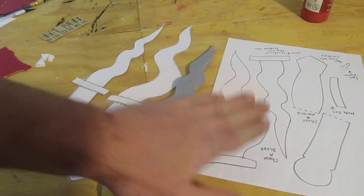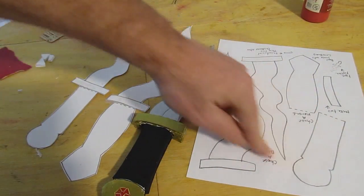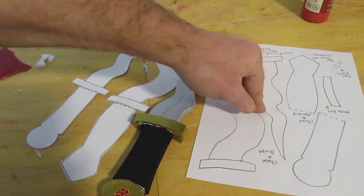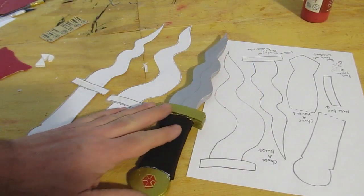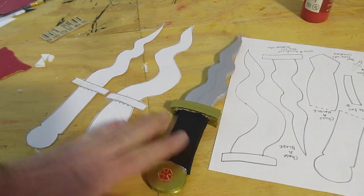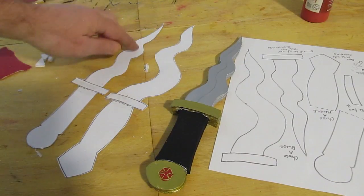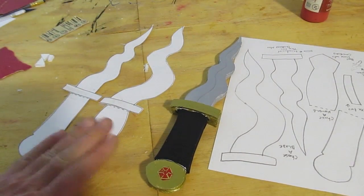And I give you the template, you print this up, download it, print it up, and then you can make your own out of cardboard or foam board. And I give you variations, you can make the loose blade or you can make the tighter blade. Fun little project.